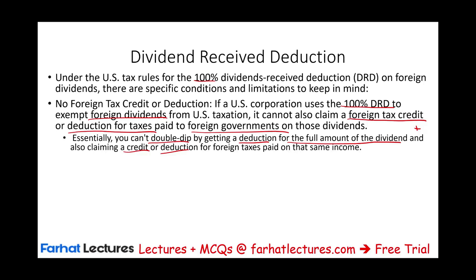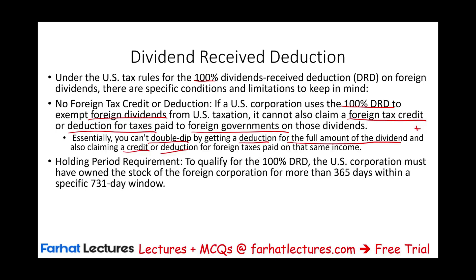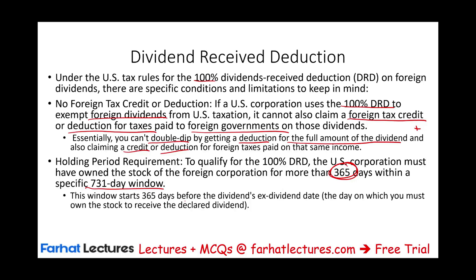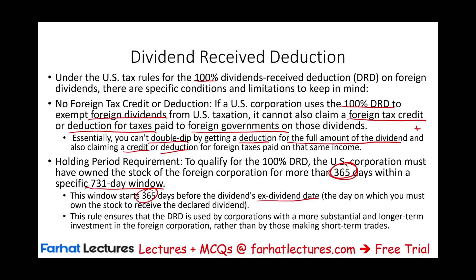There is also a holding period requirement. You have to hold the stock for a certain amount of time. The U.S. corporation must have owned the stock of the foreign corporation for more than 365 days within a 731-day window. The 365 days starts before the dividend ex-dividend date — the day on which you must own the stock to receive the declared dividend. This rule is to ensure that you're holding the stock for a substantial amount of time as a long-term investment. You're not just trading the stock, getting the dividend, then selling the stock and getting the deduction. You have to be truly making an investment.